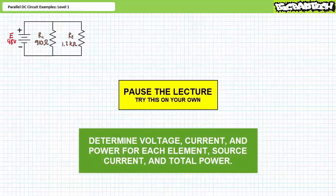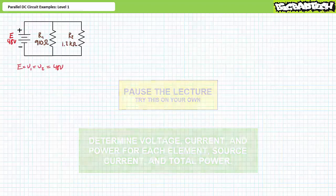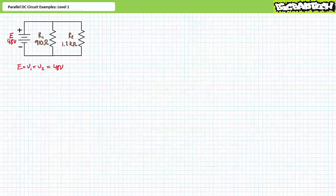If you're tracking, you should have obtained the following results. Before we begin the analysis, it's worth a moment to review fundamental parallel DC circuit properties. First, voltage across elements in parallel is the same — this is the most fundamental parallel circuit property. For this circuit, E equals V1, which equals V2, and they all equal 48 volts.